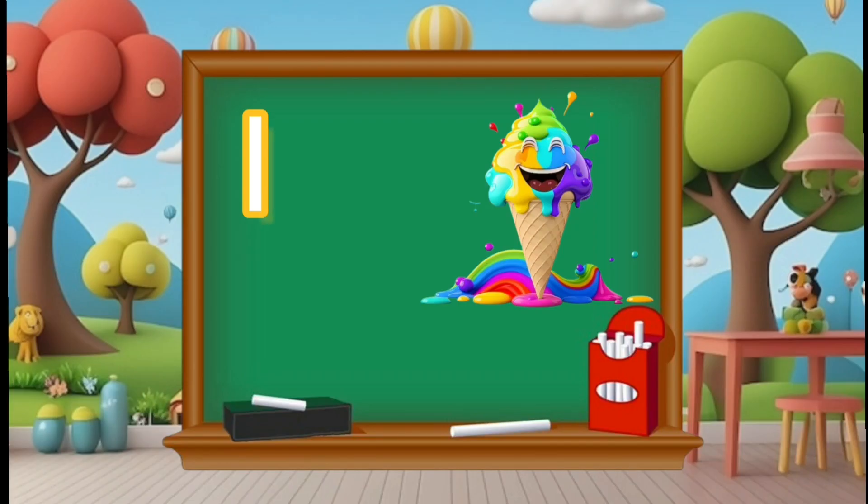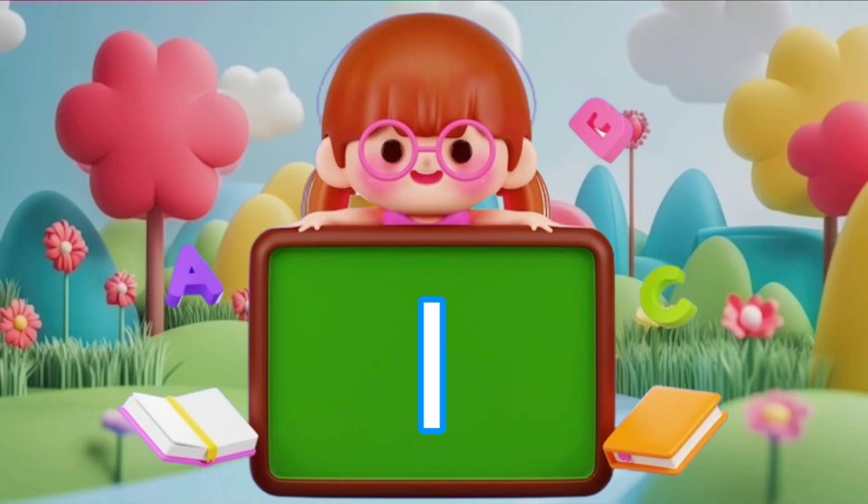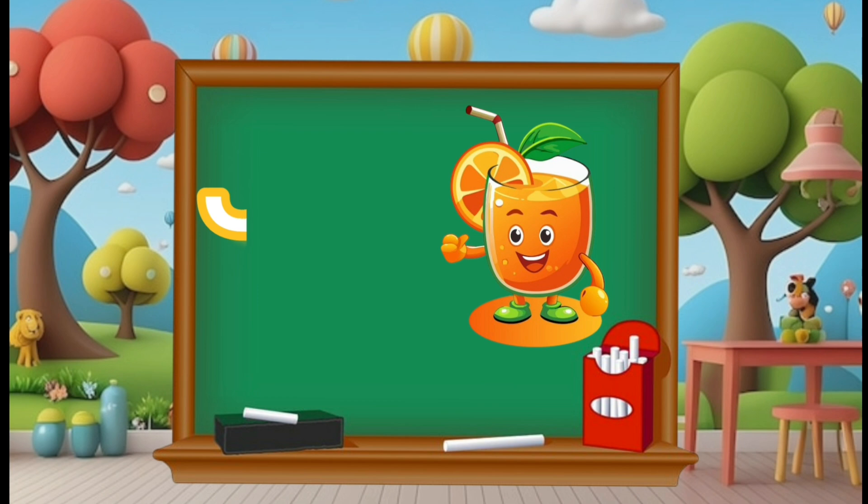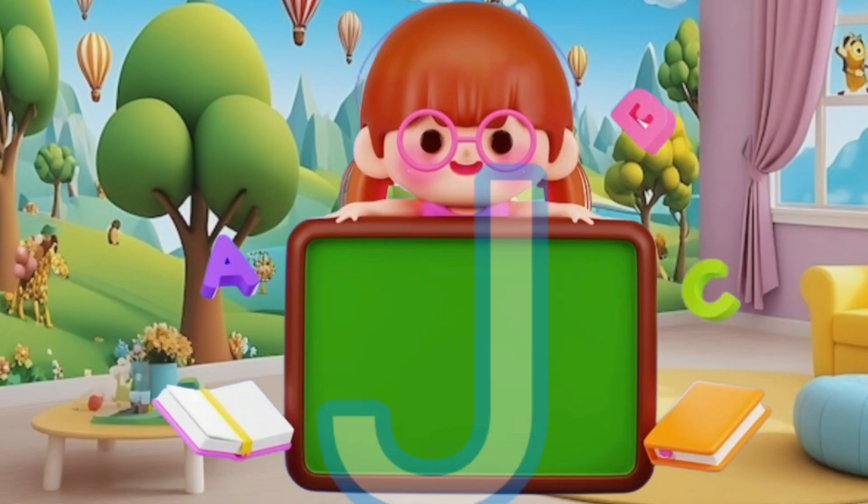I is for ice cream. Can you say I? J is for juice. Let's say J. Awesome!